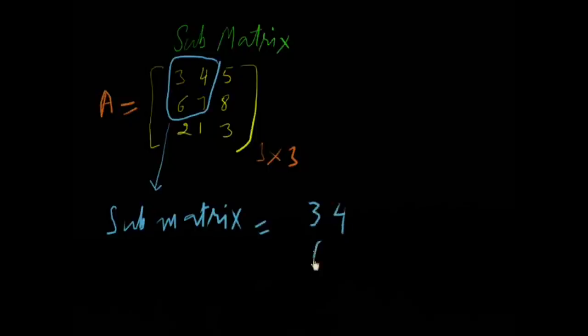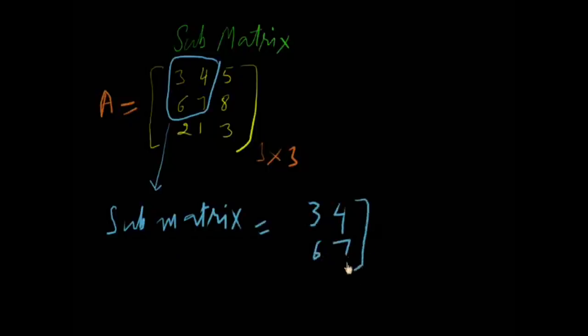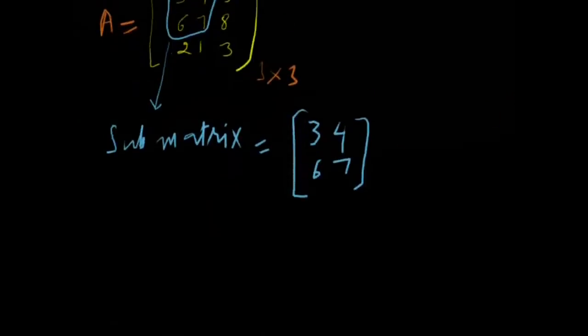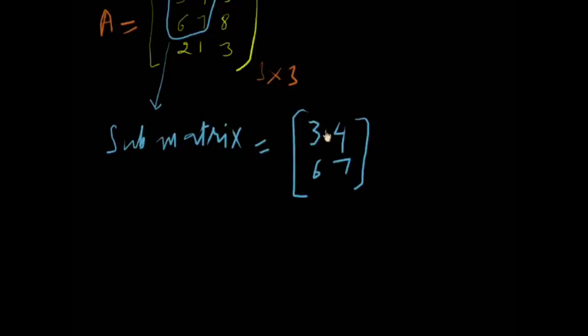six, seven. Like this, we can take sub matrix of this. We are taking one row and one column. This is sub matrix B, and this is sub matrix C, and this is three or four or six or seven.